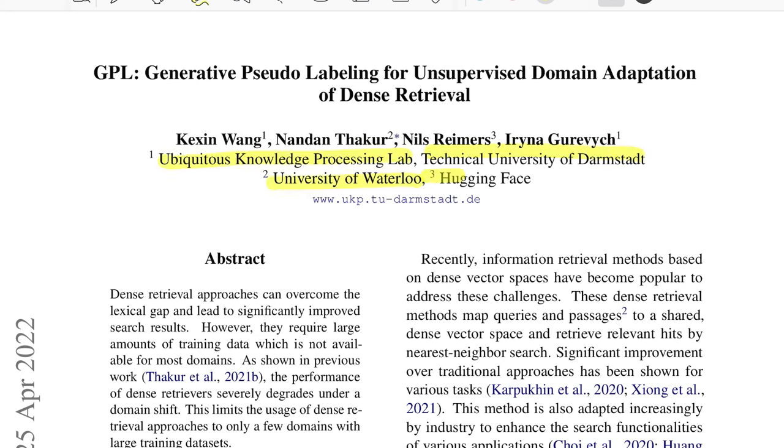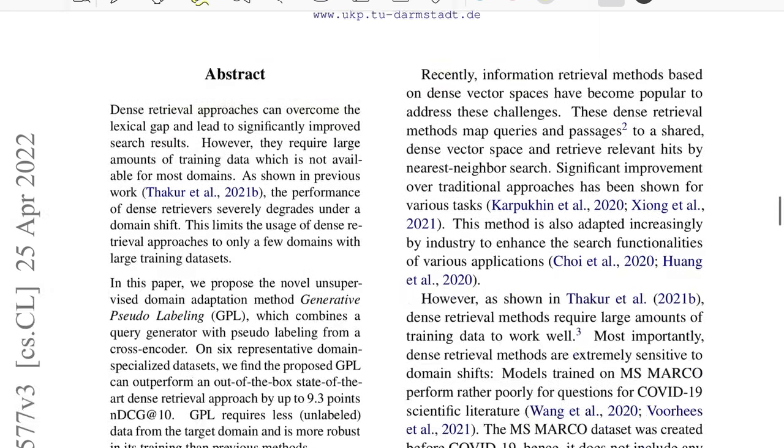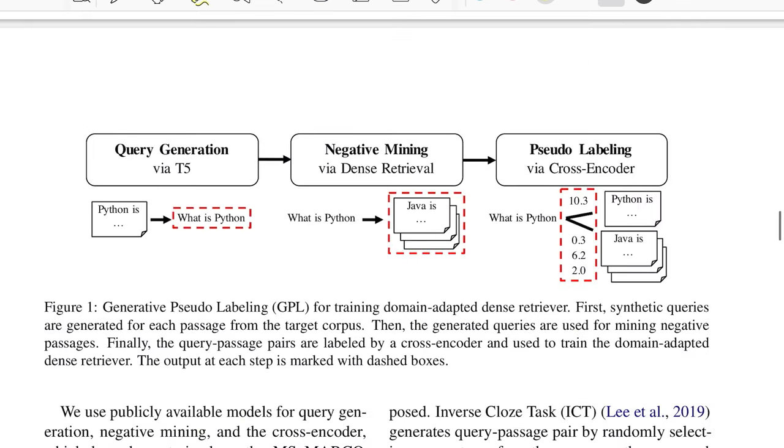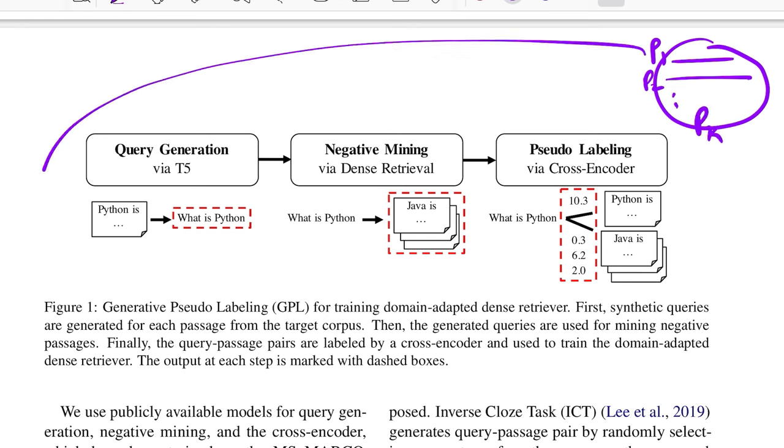This is from researchers from Ubiquitous Knowledge Processing Lab, University of Darmstadt, University of Waterloo, and Hugging Face. So let's jump onto the method that they propose. Again, our assumption is that we have a lot of unlabeled data present for a particular domain on which we're trying to train our sentence similarity model. Now this data could be at sentence level, paragraph level, depending on what the deployment scenario looks like.